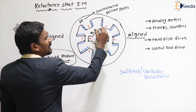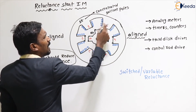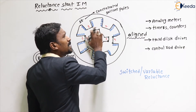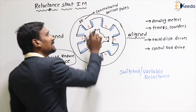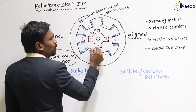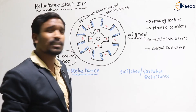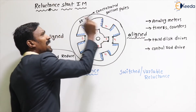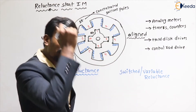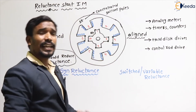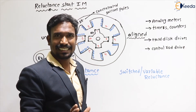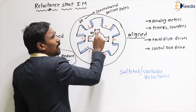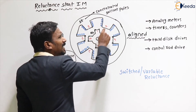When my rotor is exactly in between two poles of the stator — exactly in the middle — the reluctance is maximum because the air gap is maximum. Then my rotor tries to reduce that reluctance, so the rotor rotates.